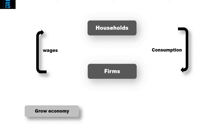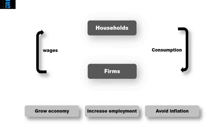Governments will want to grow the economy — i.e. the volume of money flowing around the circle — and increase employment. However, they will wish to avoid creating inflation, which arises when households are demanding goods at a quicker rate than firms can supply them. Governments can attempt to address inflation using either monetary or fiscal policies, and we will now look at each of these in turn.